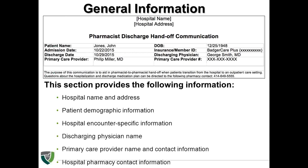The first section of the pharmacist discharge handoff communication will include the patient's general information. This section contains the hospital name and address to let the community pharmacy know which institution the patient was discharged from. It also contains the patient's name and date of birth for patient identification purposes. This section includes the patient's admission and discharge date. If the duration of hospitalization is lengthy, it can give an idea of the severity of the patient's condition.